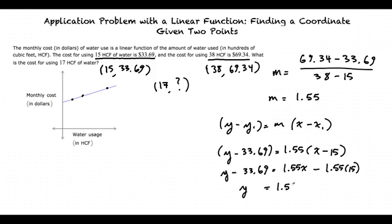And this simplifies to Y equals 1.55X plus 10.44, because 10.44 is the difference between 33.69 and 23.25.